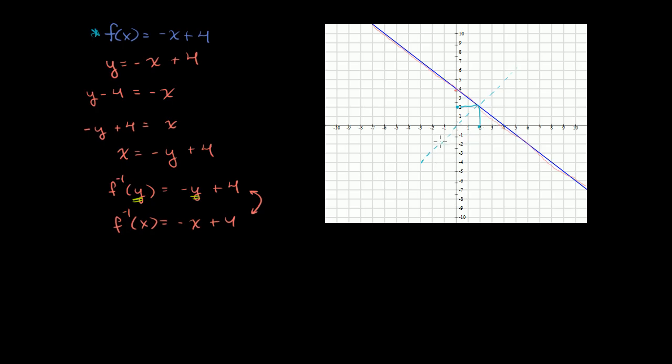What happens if you go the other way? If you input a 2, well, 2 gets mapped to 2 either way, so that makes sense. For the regular function, 4 gets mapped to 0. For the inverse function, 0 gets mapped to 4. So it actually makes complete sense.